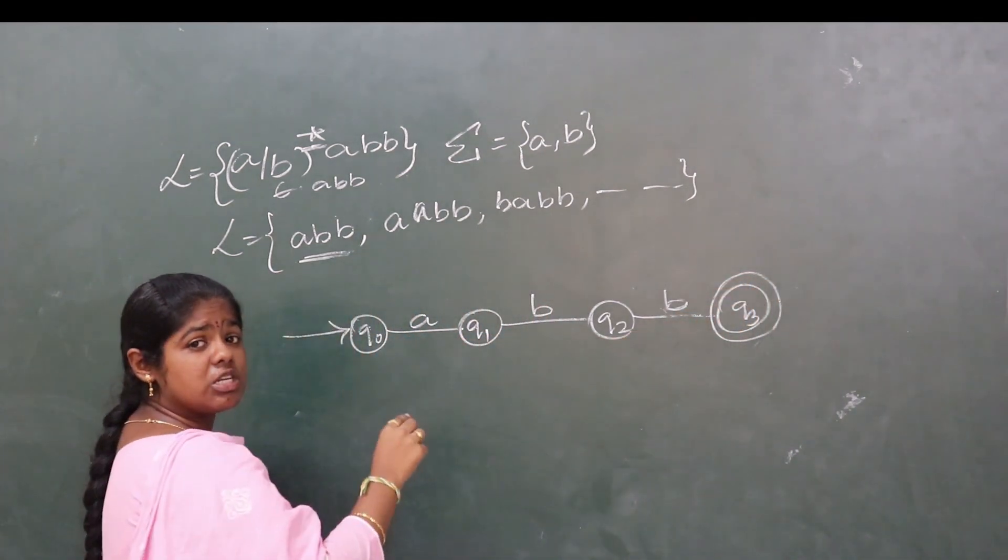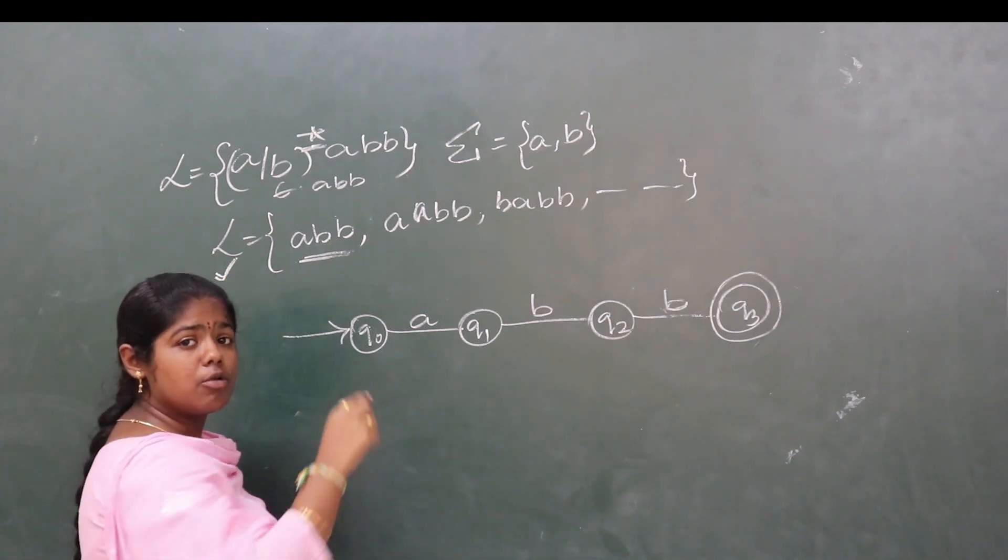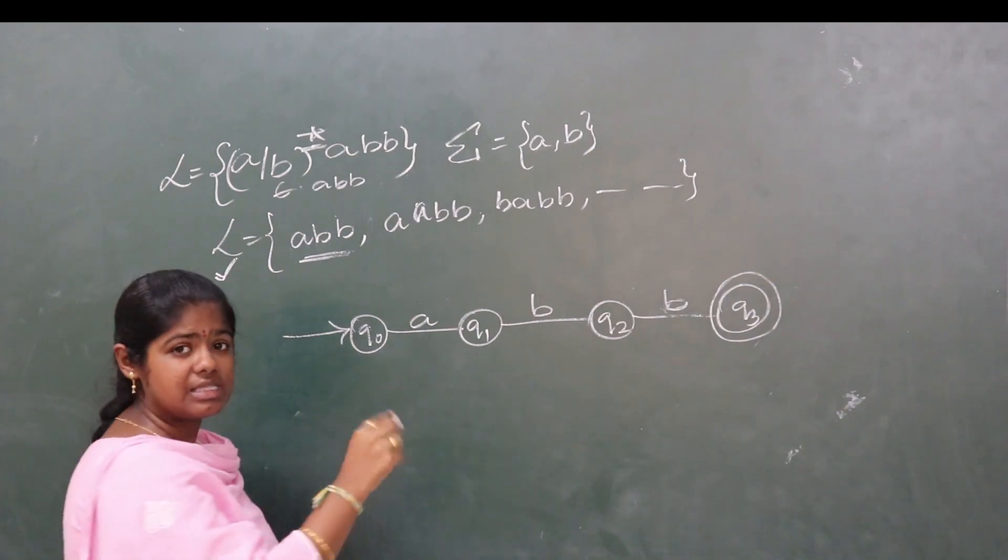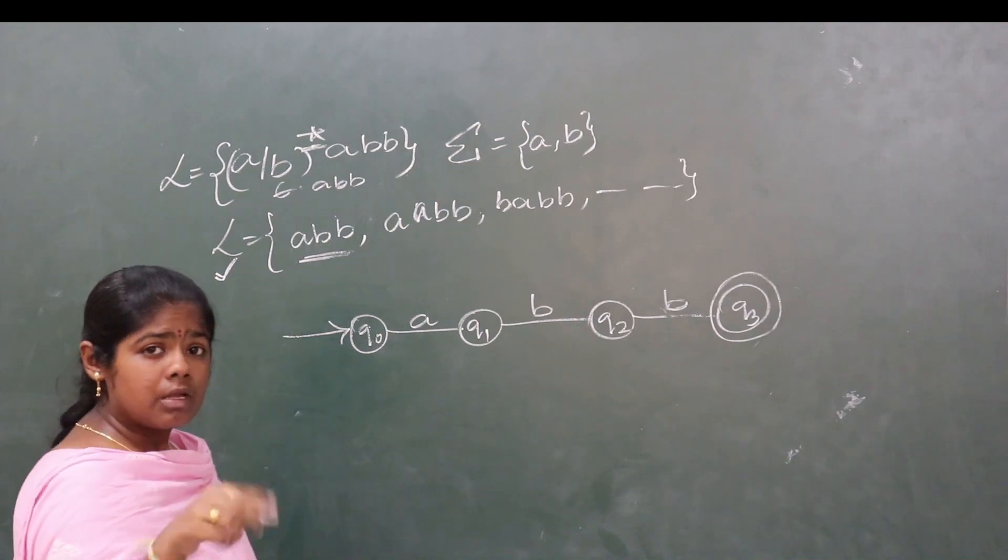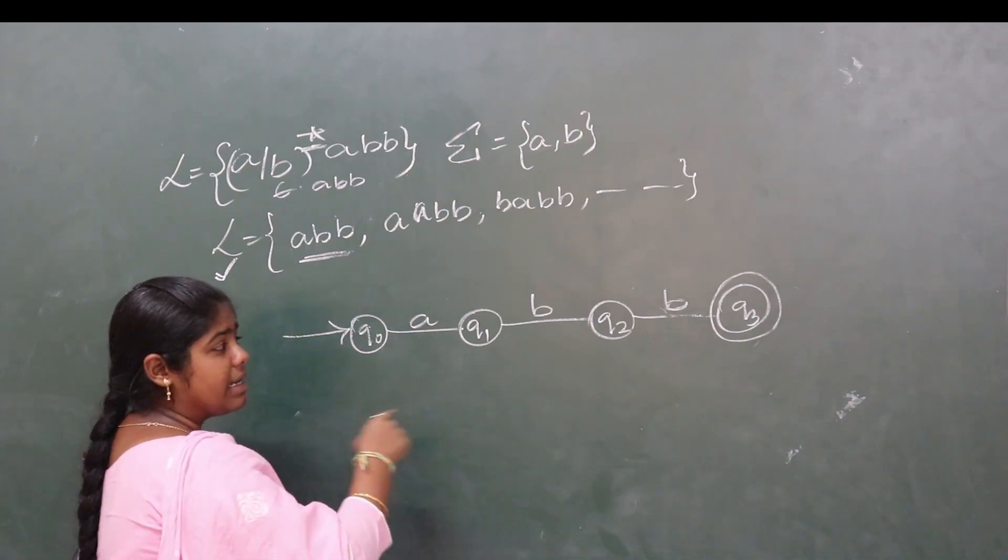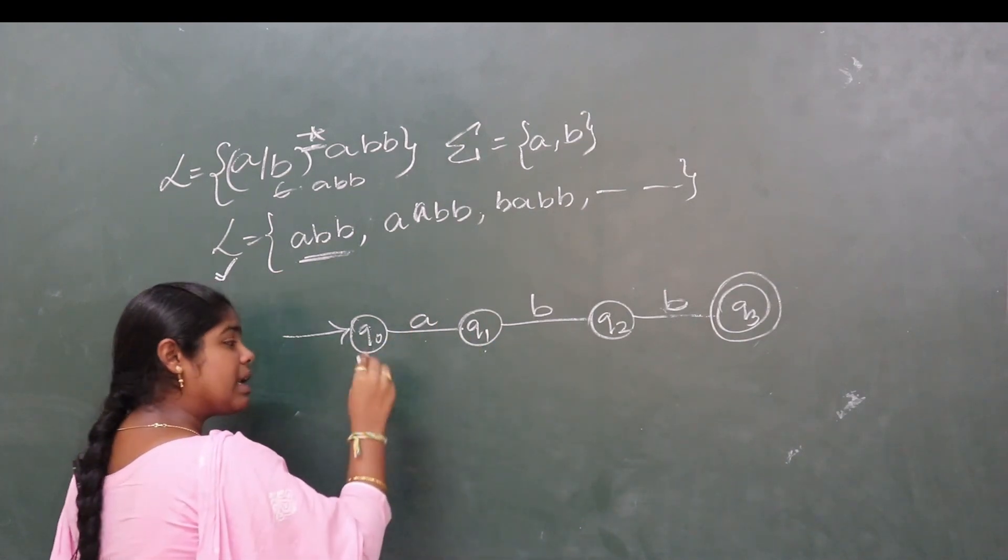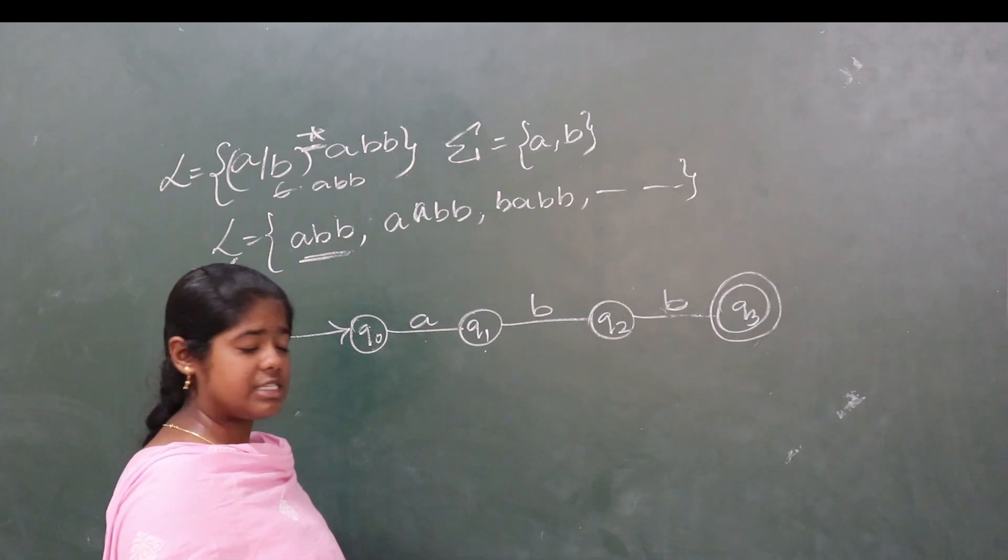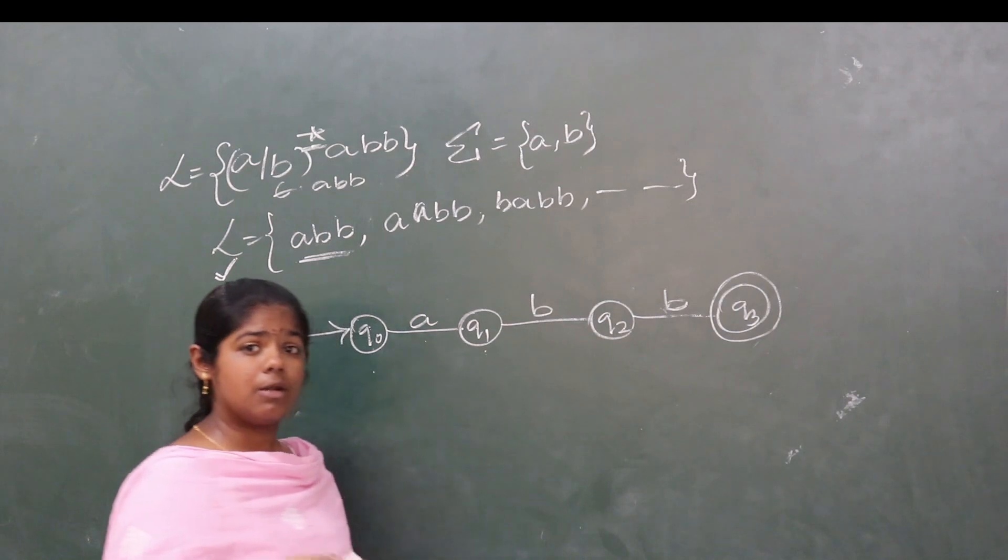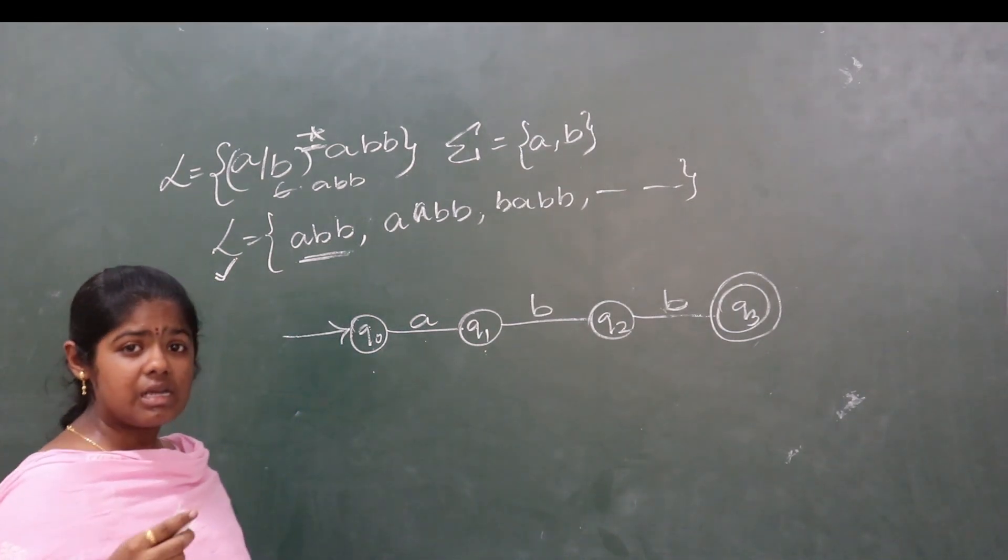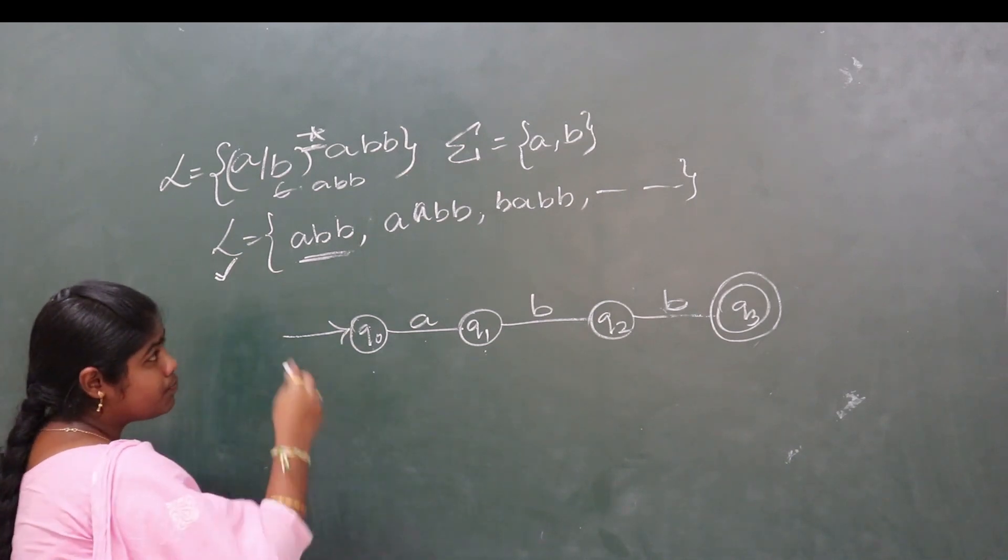The automata should satisfy only this language. For the next string, since Q0 on a goes to Q1, it can also go to any other state like Q0, Q2, or Q3. On the same input variable, it can transition to more than one state. This is the key difference in non-deterministic finite automata.